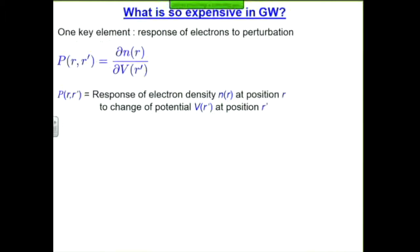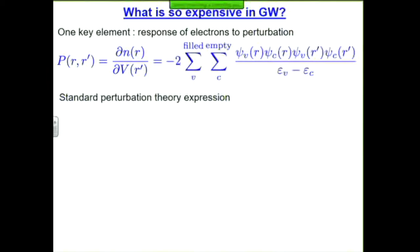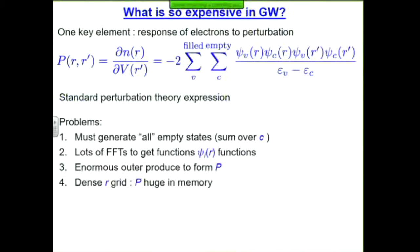Why is GW so expensive? One thing we have to calculate is how electrons talk to each other: if you change the potential at R', how much does the electron density change at R? There's an expression for this from perturbation theory — a double sum with lots of multiplications. You sum over all filled states V and all unfilled states C; in principle there are infinitely many. You have to calculate all the states, do fast Fourier transforms, then multiply all the wave functions together into a giant matrix via a huge outer product. The matrix P itself is very large because our grids for R and R' are quite dense.